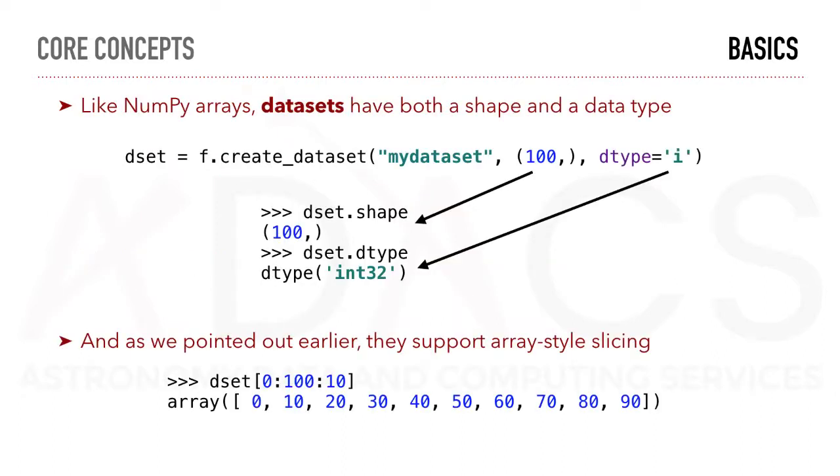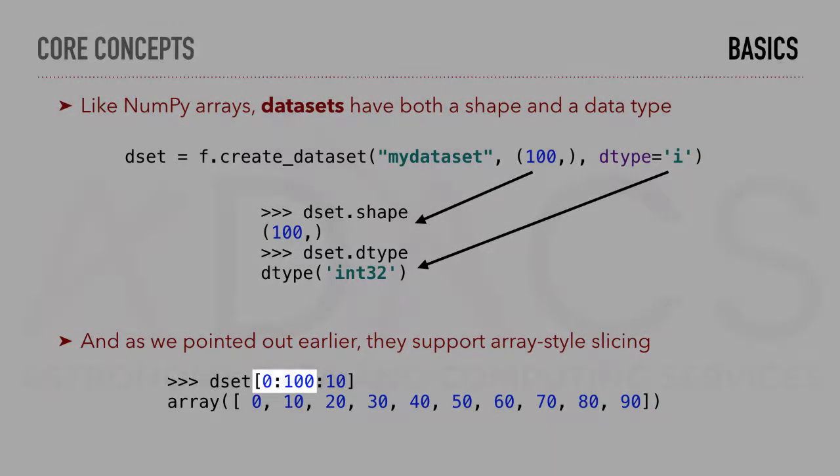Just like NumPy arrays, datasets have both a shape and a data type. Here for example, we declare a 1D array of length 100 and of type integer. You can confirm by accessing the .shape and .dtype properties of the dataset object. As pointed out earlier, datasets support array-style slicing. Here, for instance, we plot a subset of the dataset going from 0 to 100 with a step of 10.